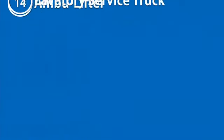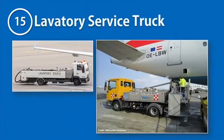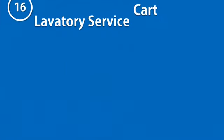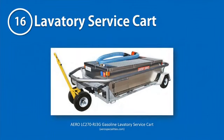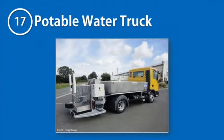A lavatory service truck is the ground support equipment responsible for draining the aircraft waste tank after each flight. It has a waste tank and a disinfectant fluid tank assembled over a truck chassis. Alternatively, it could be a lavatory service cart to be towed to the ramp by a towing tractor. A potable water truck is another simple ground support equipment used for replenishing potable water in the aircraft after each flight.